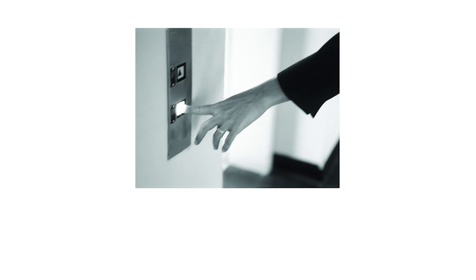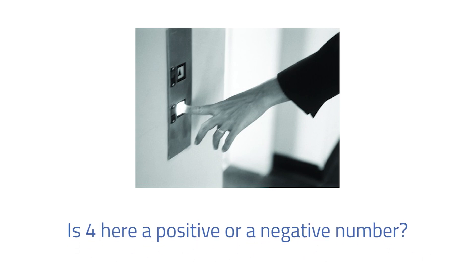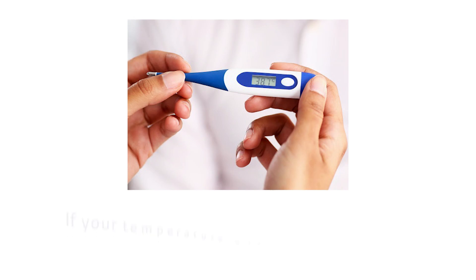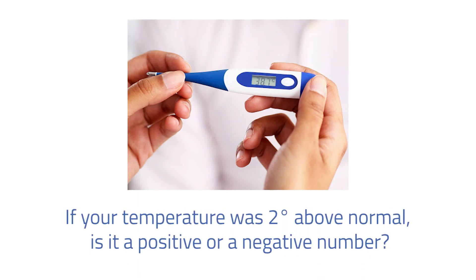Now, are you ready to try some more real-life integers? Imagine this: you're in an elevator that went down 4 floors. Do you think 4 is a positive or negative number? The number 4 in this picture is a negative number because it is going down. How about if your temperature was 2 degrees above normal? The number 2 is a positive number because it went up.